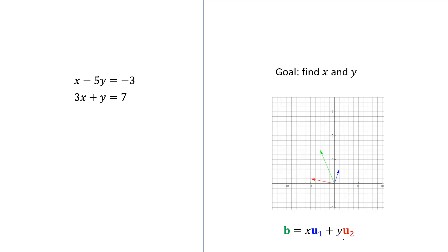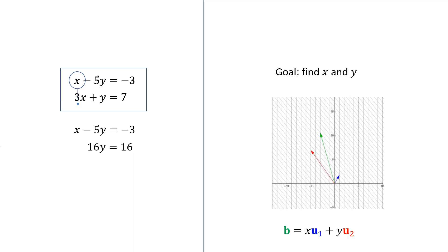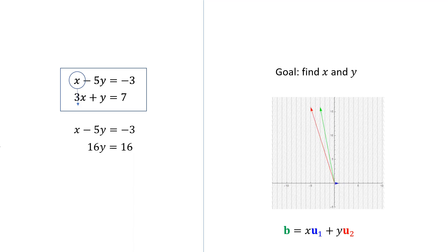Now what does it mean when we pivot? What we have, after we pivot, is a new linear transformation. Here's what the transition looks like as we go from the old linear transformation to the new one. Even after pivoting, the problem remains the same: express b as a linear combination of u1 and u2. Only now the problem's easier because u1 is just (1, 0).